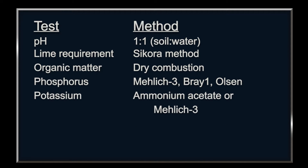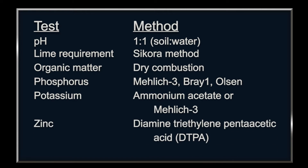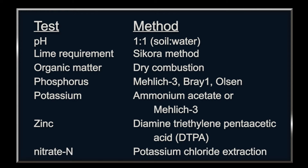The test for potassium may use ammonium acetate or Melek-3. The test for zinc uses diamine triethylene pentaacetic acid, commonly known as DTPA. The laboratory can determine many other elements, including nitrate nitrogen, using the potassium chloride extraction method for the late spring nitrate test and end-of-season stock nitrate test.